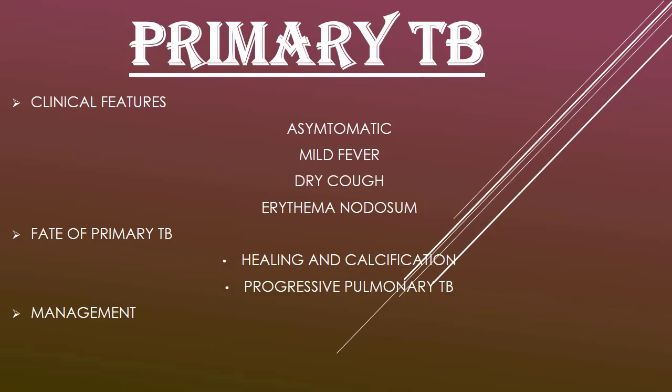Clinical features of primary TB: In the majority of patients, primary TB is asymptomatic and is only diagnosed by chest X-ray and tuberculin test. Mild fever lasts for 7–14 days with a dry but mild cough. Erythema nodosum — bluish-red, tender cutaneous lesions on the shin and less commonly on the thighs — may also occur.